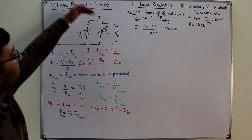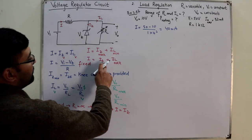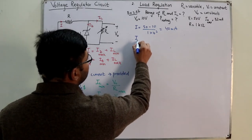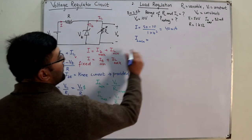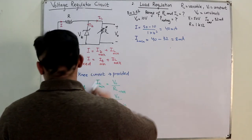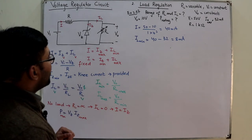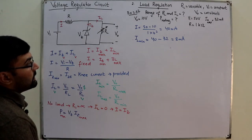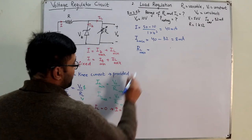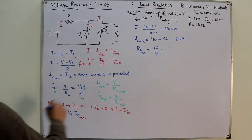Since I = IZ + IL and I = 40 mA, ILmin = I − IZmax = 40 − 32 = 8 mA. From ILmin, we find RLmax: RLmax = Vout / ILmin = 10 / 0.008 = 1.25 kΩ.